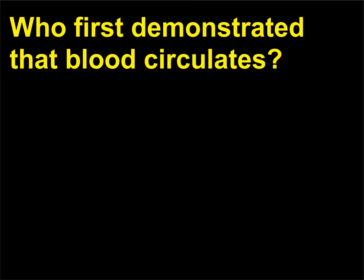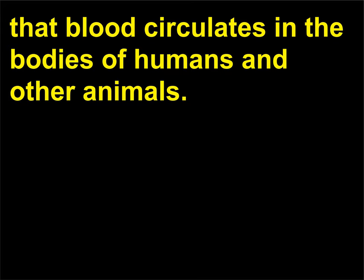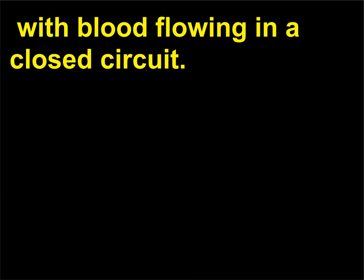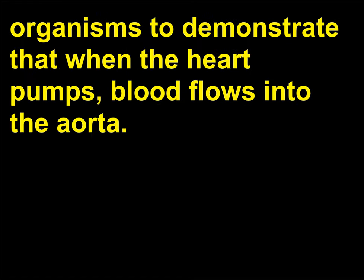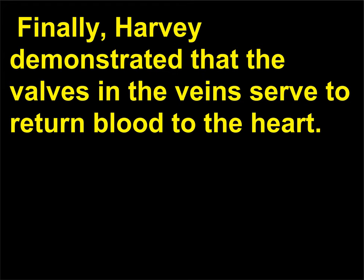Who first demonstrated that blood circulates? William Harvey (1578–1657) was the first person to demonstrate that blood circulates in the bodies of humans and other animals. Harvey's hypothesis was that the heart is a pump for the circulatory system, with blood flowing in a closed circuit. He conducted research on live organisms as well as dissection of dead organisms, demonstrating that when the heart pumps blood flows into the aorta, and that when an artery is slit, all the blood in the system empties. He also demonstrated that the valves in the veins serve to return blood to the heart.